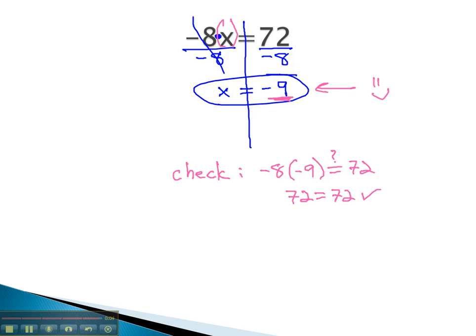The division principle: we get rid of multiplication by dividing both sides by the number.